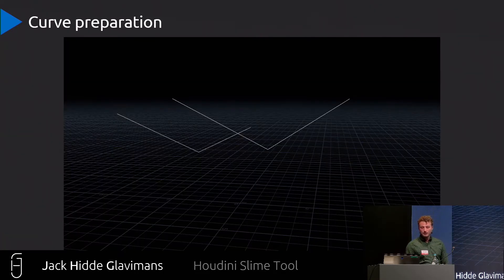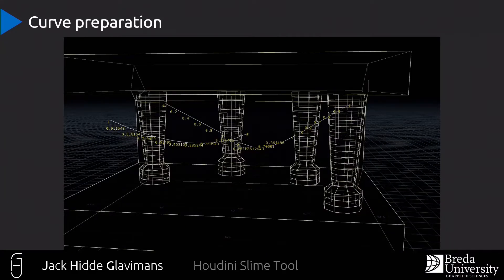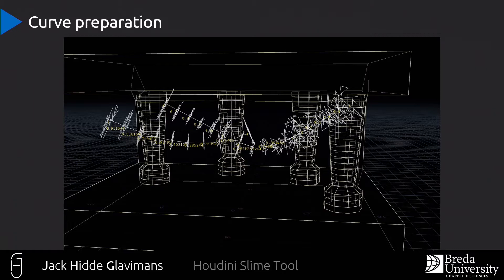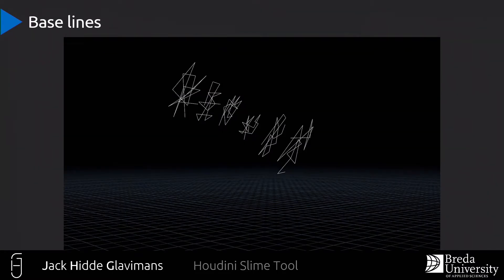We start with the lines that the user creates, and then the tool checks if the lines go through the world and creates separate lines with curve U attributes. I use this throughout the tool in different ways — for example, here I use a parabolic gradient to scale the initial points that are scattered on it.